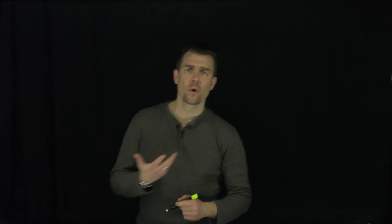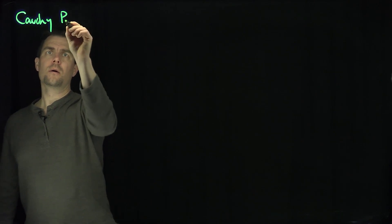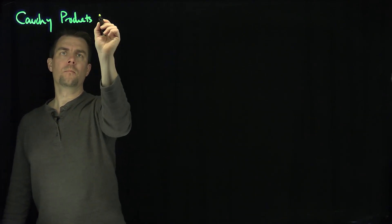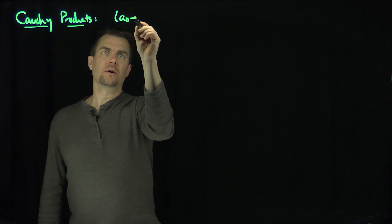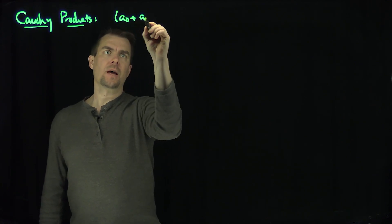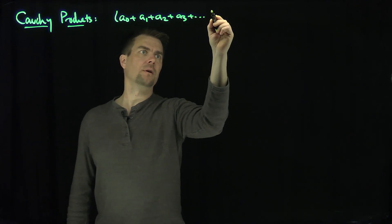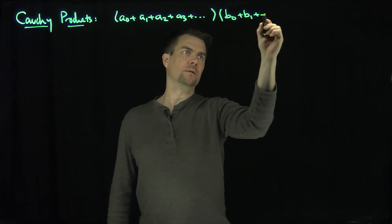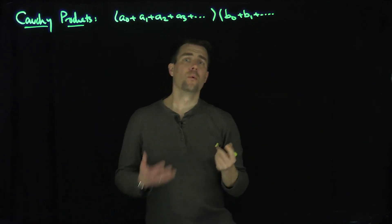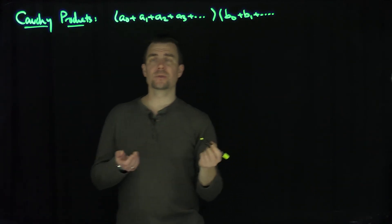Hello, students. In this video, we'll discuss Cauchy products. What are Cauchy products? Well, formally, what would happen if we had a series a0 plus a1 plus a2 plus a3 and so on forever, and we multiplied that by another series b0 plus b1 and so on forever? What we could do is multiply these series out and collect them in a nice way.